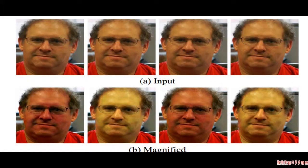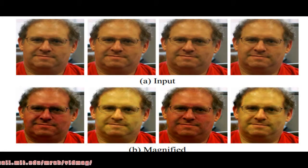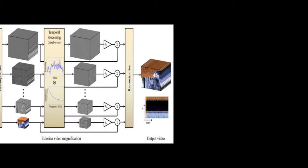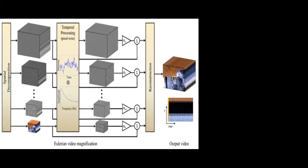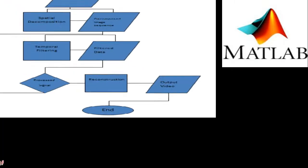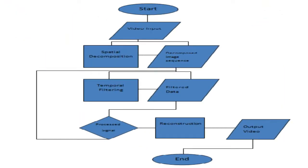This method is used to see the changes of an image which are not visible to the human eye. Diagrams and source codes provided by the authors of EVP were analyzed to make a system flow of a real-time video-based heart rate measurement.